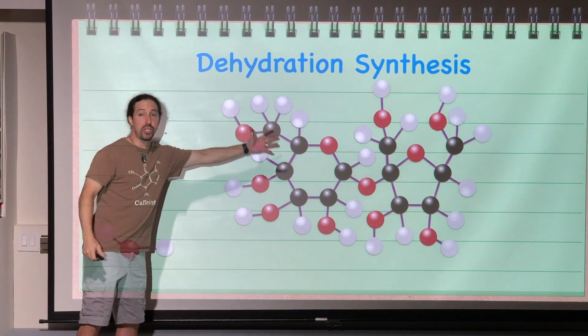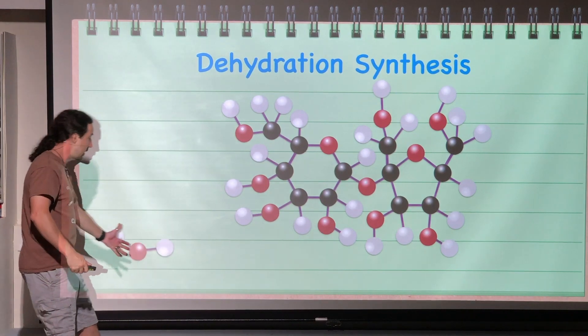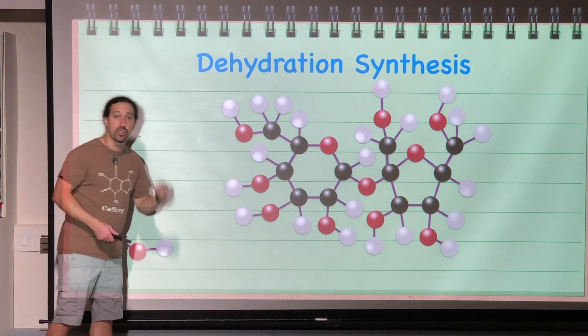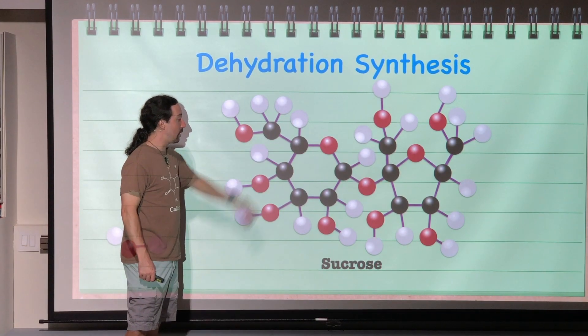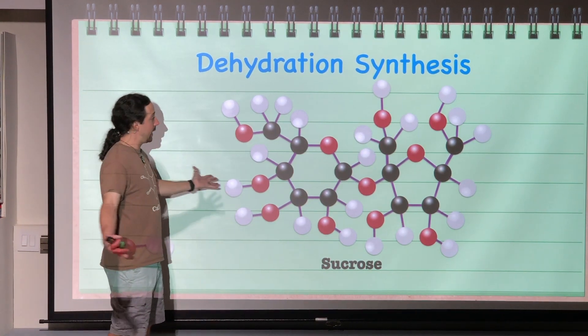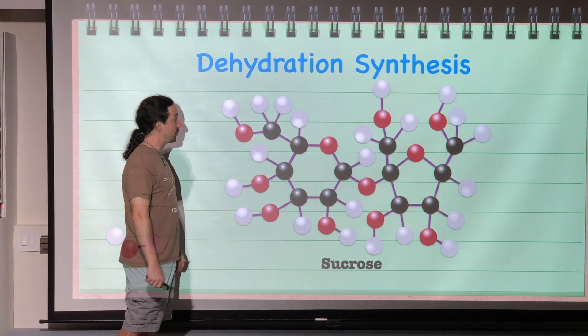It is the formation of water from those components that come from each monomer. And by the way, this molecule right here, this dimer is called sucrose, which is table sugar. It's what I put in my coffee every day. It is C12H22O11. And there we go. So that is sucrose.